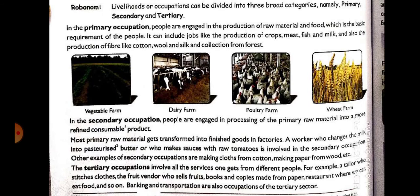Then second comes secondary occupation. In secondary occupation, people are engaged in processing primary raw material. In primary occupation, raw material is grown. In secondary occupation, when that raw material is sent to factories and converted into something else, that kind of occupation comes under secondary occupation.